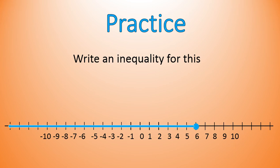I want you to write the inequality for this graph. Look at the graph and notice whether it is an open circle or a closed circle, then write the inequality. The answer is x is less than or equal to 6. It starts at 6 and highlights everything less than 6, but it's a closed or filled-in circle — so it includes 6 as well: x is less than or equal to positive 6.